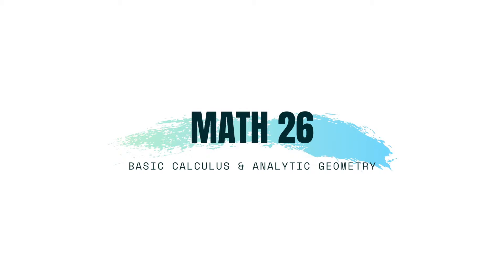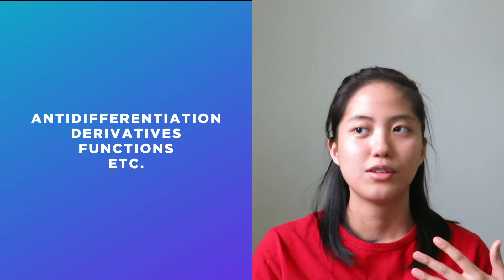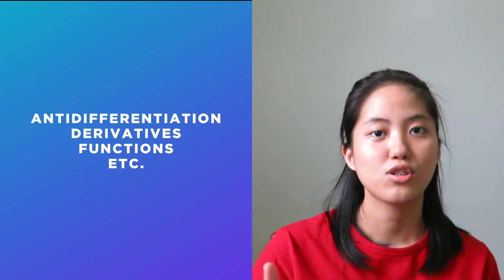That brings us to the next subject. At UP, basic calculus and analytic geometry is called Math 26. I'm not sure why they use numbers for course codes, but if you know, comment down below. We discussed anti-differentiation, derivatives, functions, and related topics. We used TC7 by Lighthold as our reference book, and our professor also provided PowerPoint materials.